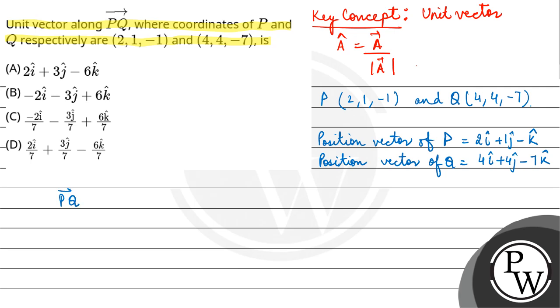Now to find PQ, that would be position vector of Q minus position vector of P. So (4î + 4ĵ - 7k̂) - (2î + ĵ - k̂). This gives us: (4-2)î + (4-1)ĵ + (-7+1)k̂ = 2î + 3ĵ - 6k̂.